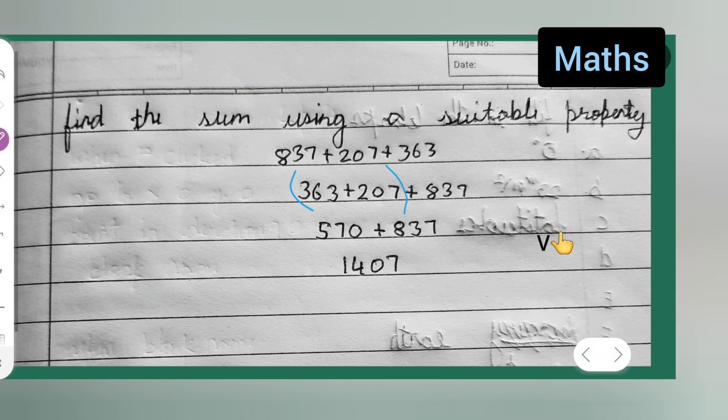First, add these 2 numbers. So, 363 plus 207 will be, we will get 570.